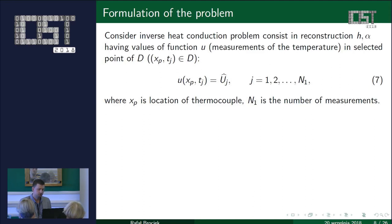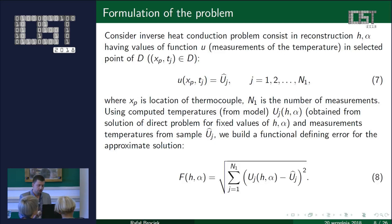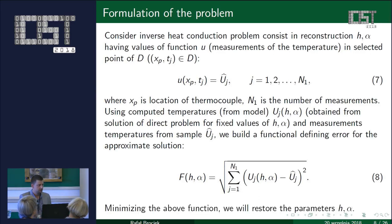When we fix the unknown parameters H and ALF and solve the direct problem numerically, we can compare these calculated temperatures with measurements from the real object and build the objective function (formula 8). By minimizing this function, we get the approximate solution of our problem — we solve the inverse problem. So the inverse problem is transformed into an optimization problem.